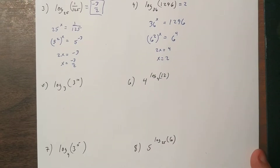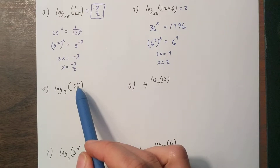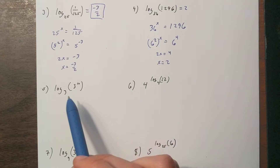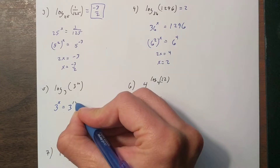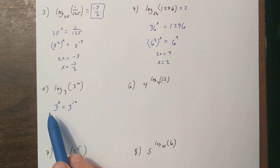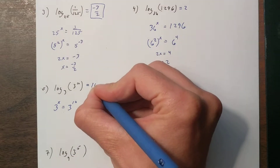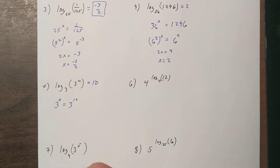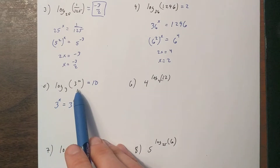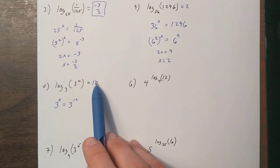Now we're getting to ones that look hard but are incredibly easy. For example, log base 3 of 3 to the power of 10. You don't need a calculator — let's rewrite it as an exponential: 3 to what power is 3 to the 10th? That means x must equal 10. This makes sense because taking a logarithm of an exponential is like doing an operation and then its inverse — they cancel each other out, and we simply get 10.